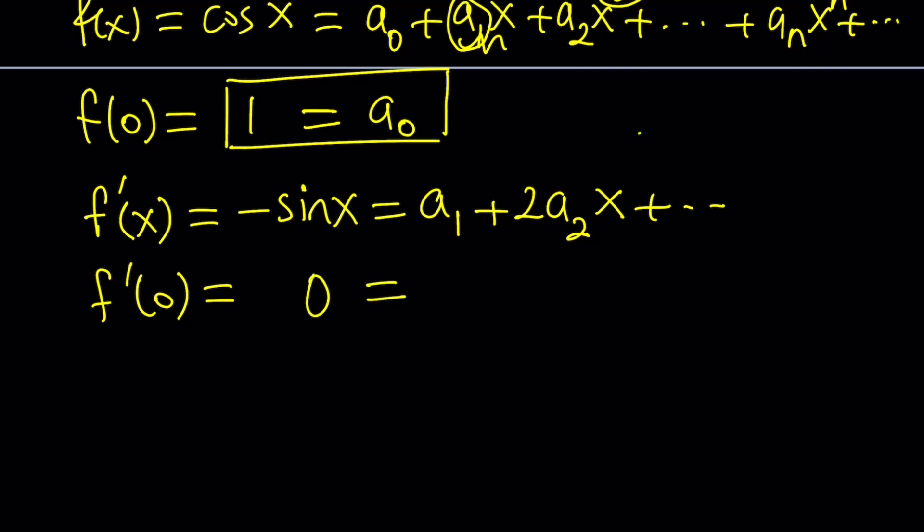And then here, if you replace x with 0s, these are all 0s. You're going to get a sub 1. Hmm. A sub 1 is 0. A sub 0 is 1. Are they going to just interchange?